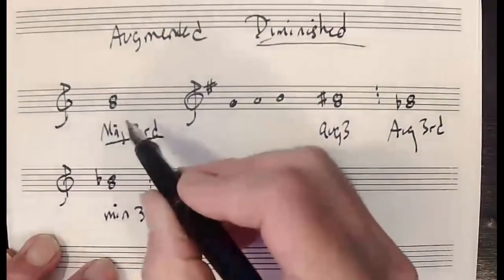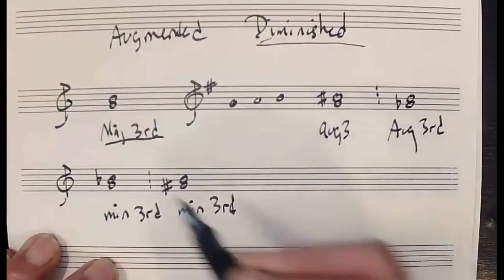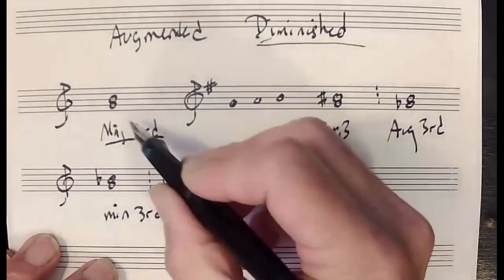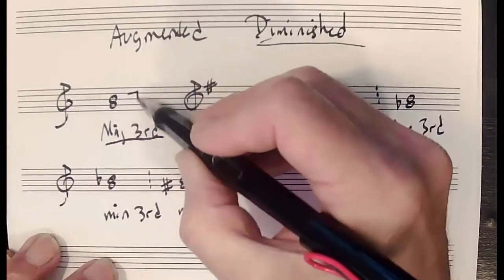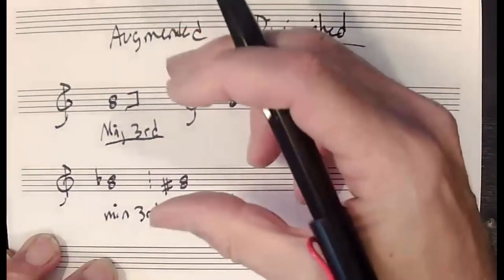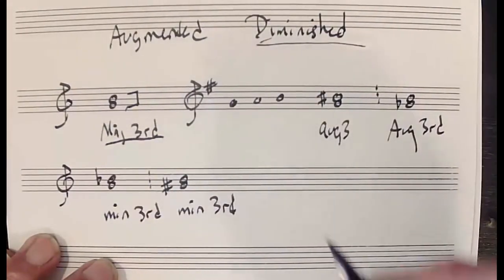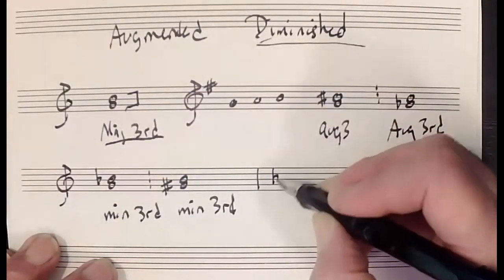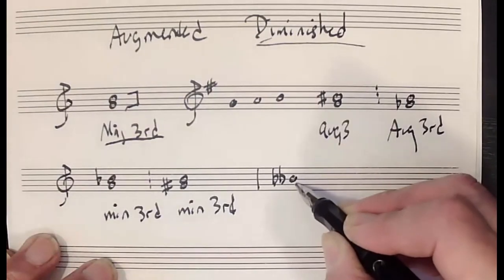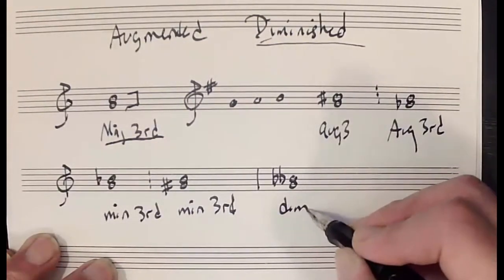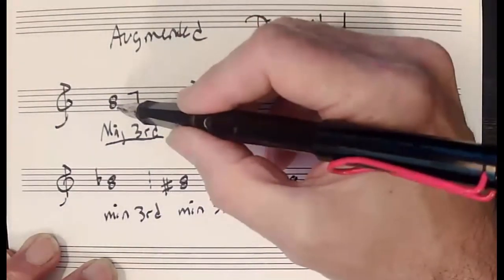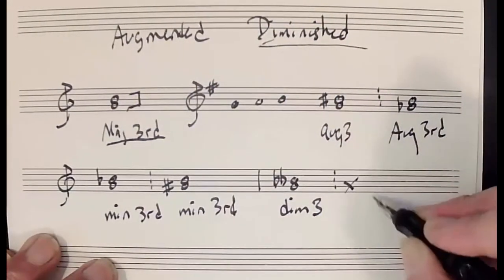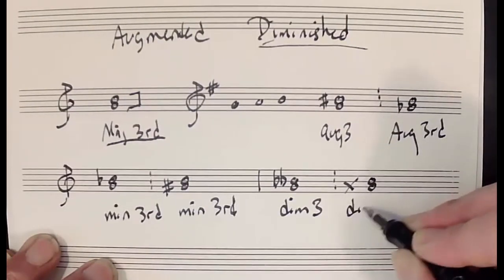To go from a major third to a diminished third, I need to contract the interval by two half steps. I can take the top note B and make it a B double flat — and that would be a diminished third. Or I could take the bottom note G and raise it to G double sharp — and that would also make it a diminished third.